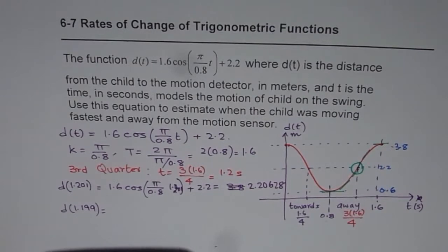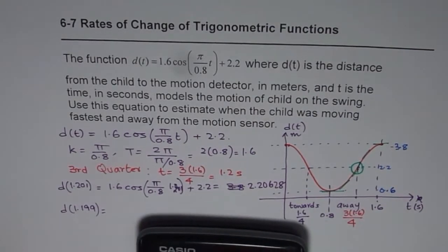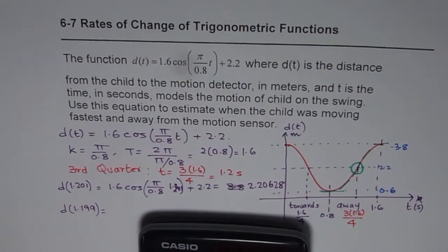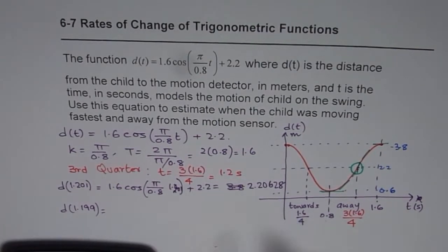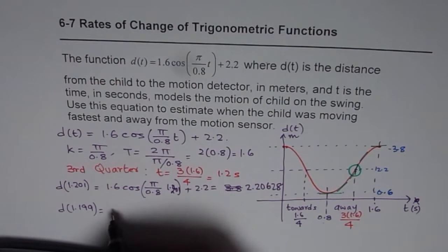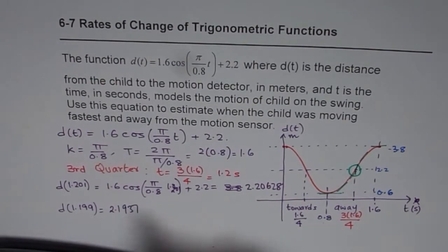Now let us calculate the value for 1.199. So it is 1.6 cos(1.199π/0.8) + 2.2 equals to 2.1937.